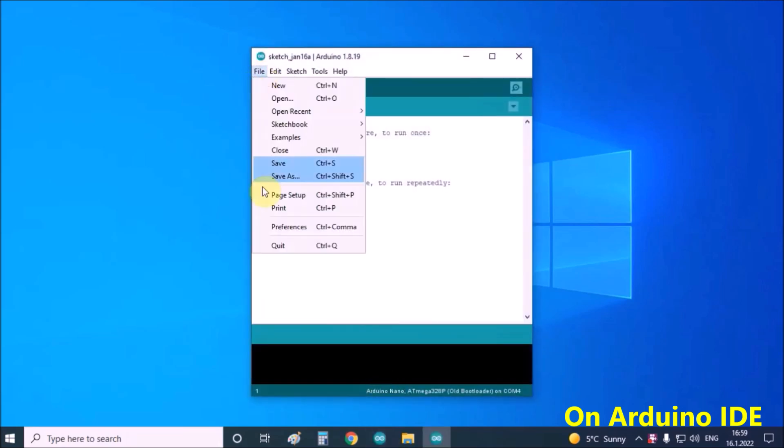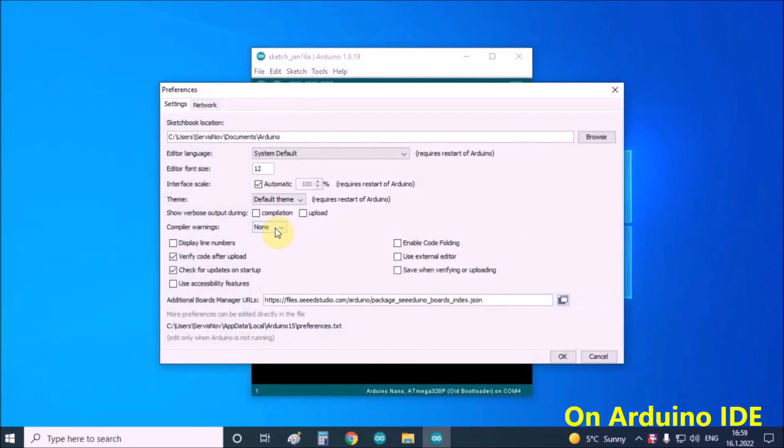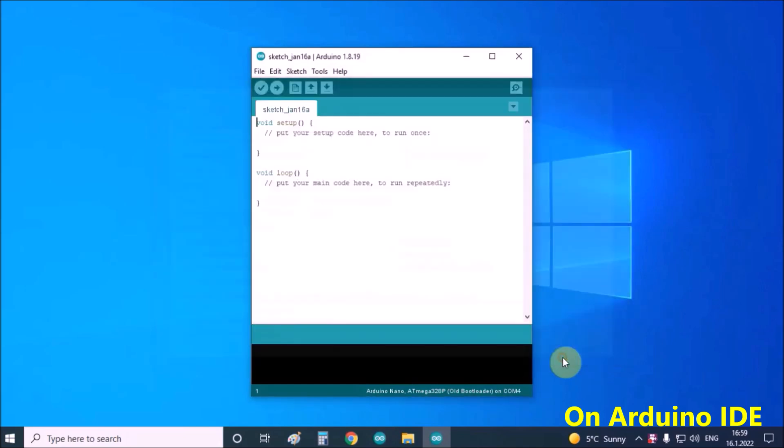Next click on File, Preferences and copy this URL, the given URL to Additional Boards Manager URLs. And click OK.